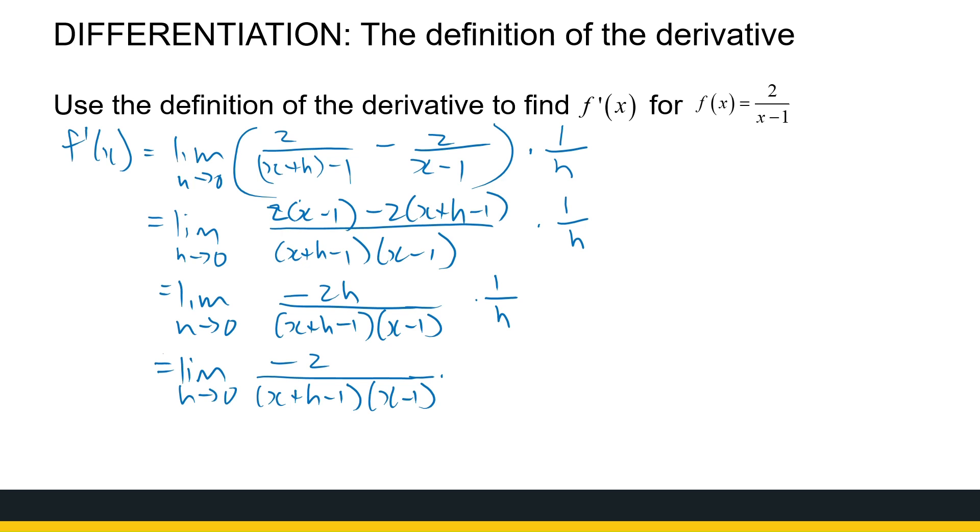Now, we're looking at the limit as h approaches 0, and when we looked at limits, we saw we can simply substitute the value of h in if it doesn't make the denominator 0. So in this case, if I substitute h equal to 0 in, the denominator does not get 0, and I'm left with minus 2 over x minus 1, x minus 1. So it's x minus 1 squared. And later, when we look at the rules, you can compare it and see the rules will get you to the same derivative. I just want to make sure you know how to use the definition, because that's where it actually comes from.